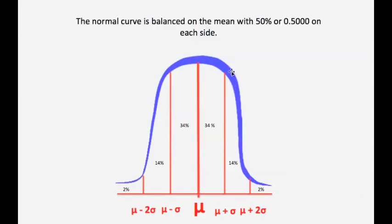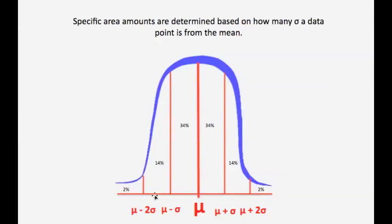Notice that the normal curve is perfectly balanced upon the mean — 50% of the data lie above the mean, and 50% of the data lie below the mean. Based upon how many standard deviations above or below the mean, we can trap specific amounts of area to know what is going on with the curve. Specific amounts are determined based on how many standard deviation points a data point is from the mean. This is really a very powerful curve.